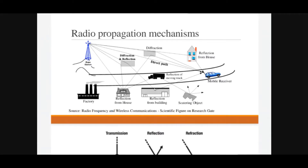Now, radio propagation mechanisms. The mobile receiver and base station are situated at a very far distance from each other. In between them there are various obstacles such as large buildings, residential areas, factories, and mountains. We examine how the signal travels from the transmitting site to the receiving site, and how it encounters different obstacles along its path.